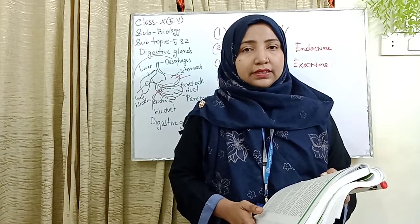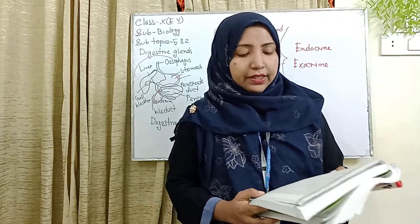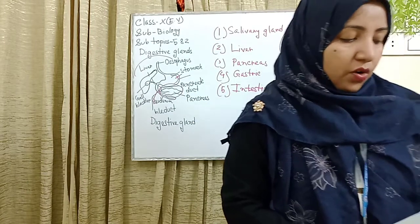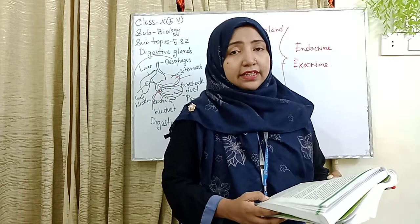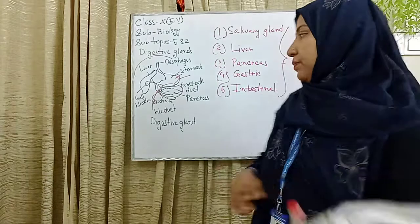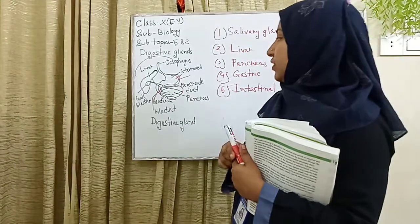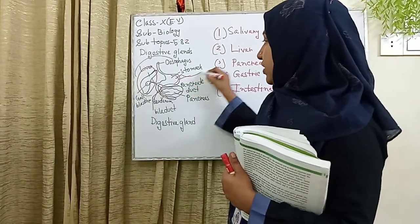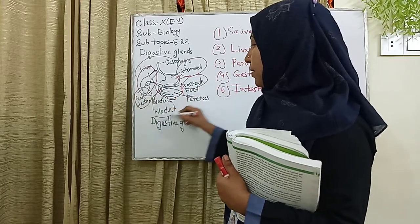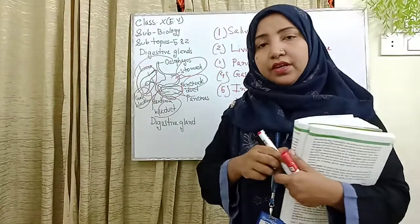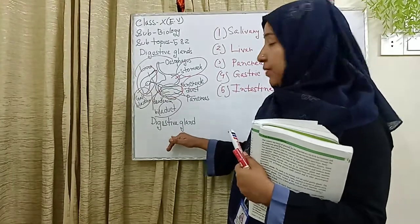The last gland is the intestinal gland. Located in the wall of the small intestine, these are called intestinal glands, and their secretion is known as intestinal juice. Today I gave you a short brief about the digestive glands. Please draw this figure showing the liver, stomach, pancreatic duct, gallbladder, duodenum, bile duct, and pancreas.